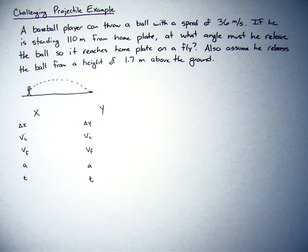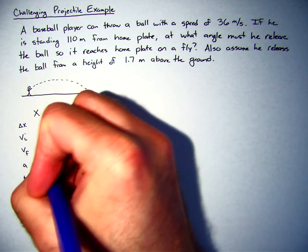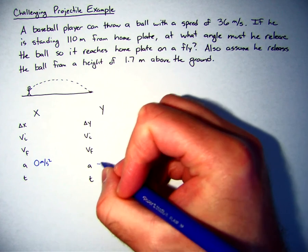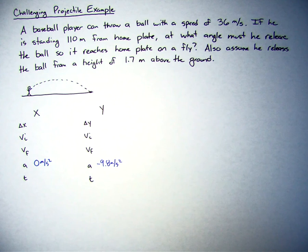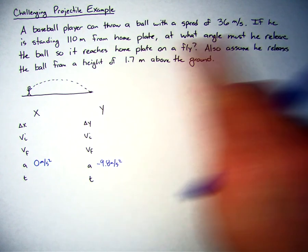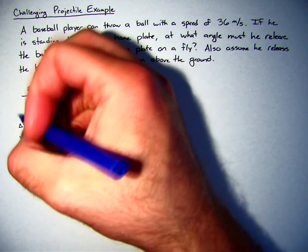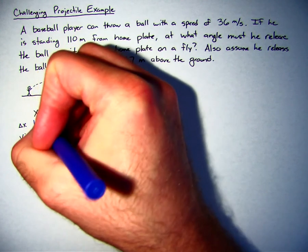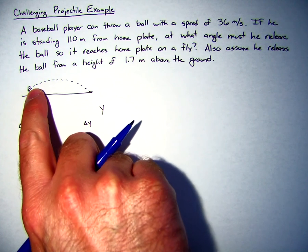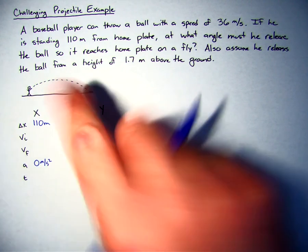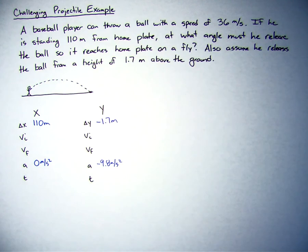And we know the standards, so we know that the acceleration in the x is 0 meters per second squared. We know the acceleration in the y is negative 9.8 meters per second squared. We know from the problem that he's standing 110 meters from home plate, so that's our horizontal displacement. We also know that he's releasing it from a height of 1.7, so it's going from 1.7 down to 0. So negative 1.7 meters is the y displacement.